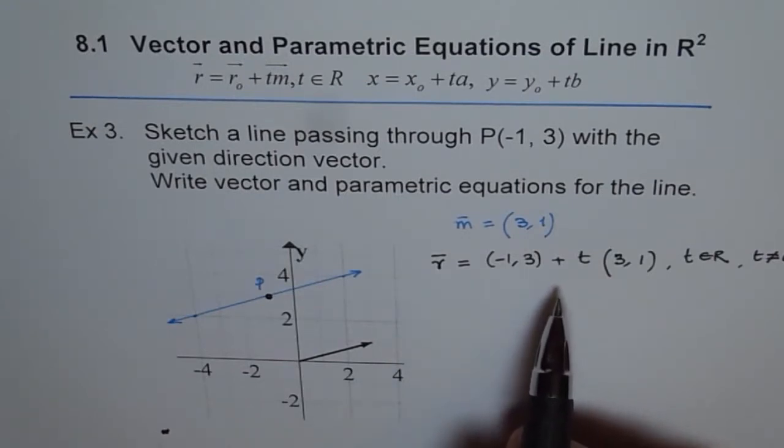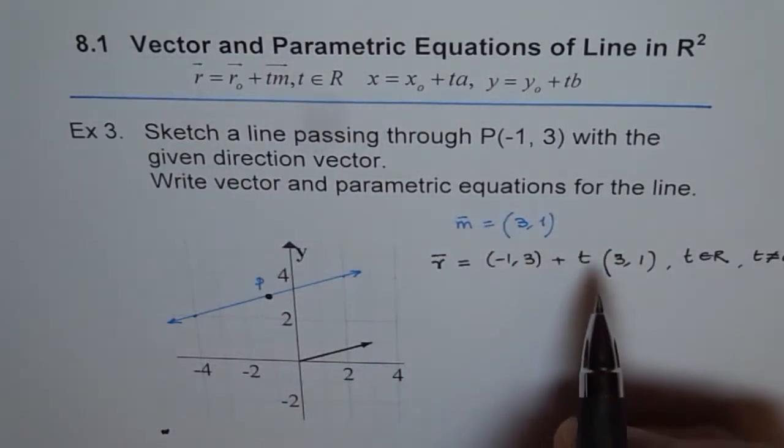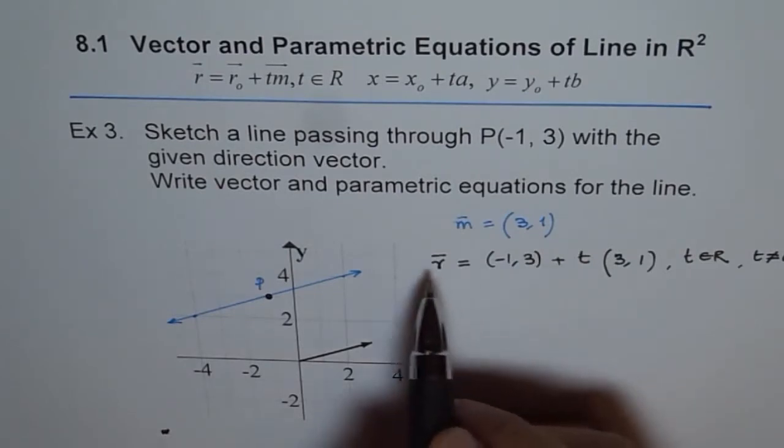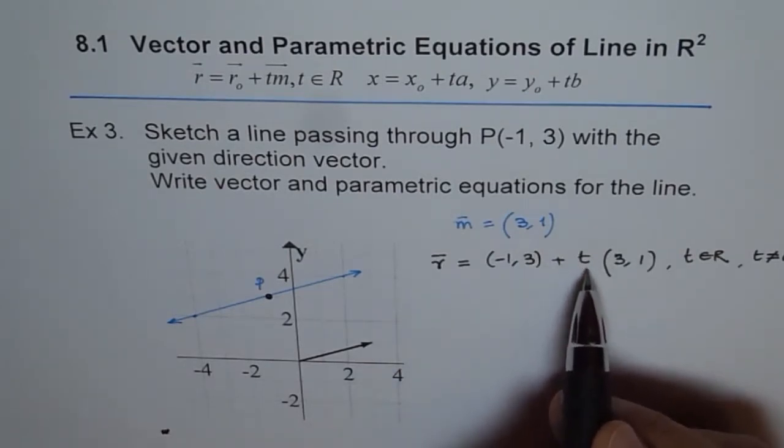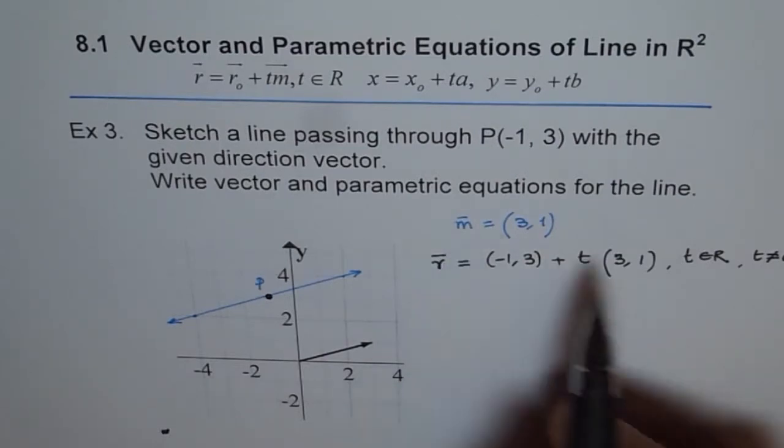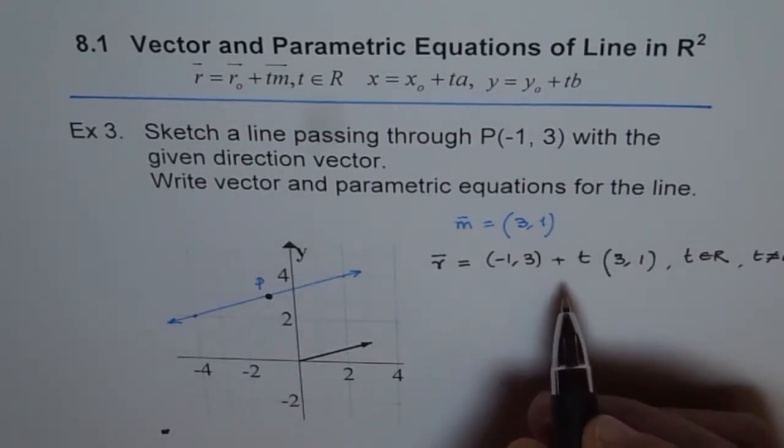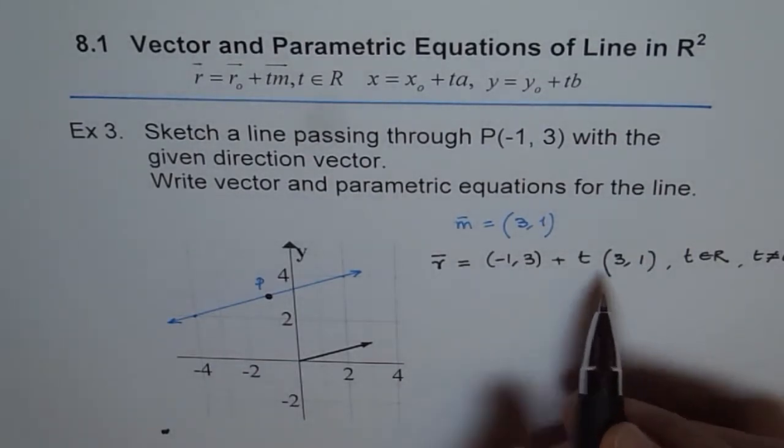Okay, now this is our vector equation, and now we will write parametric equation. So in parametric equation, what we do is - in vector equation we treat t as a scalar multiple of M, do you see that? Because M is your direction vector and t times M is parallel to it. Now for parametric equation, we break it up.